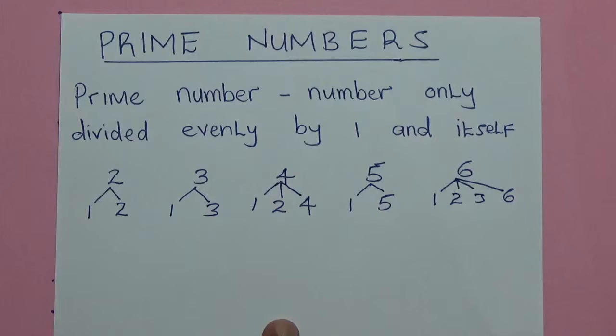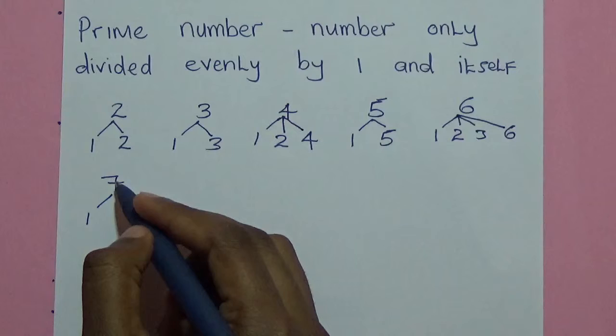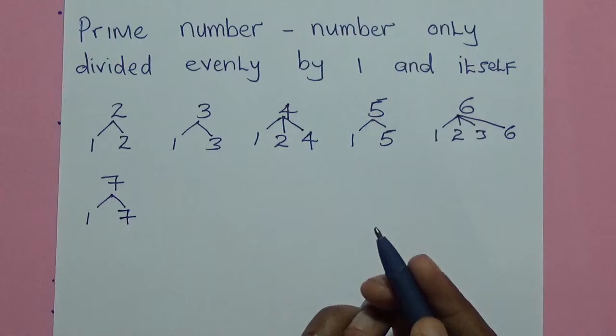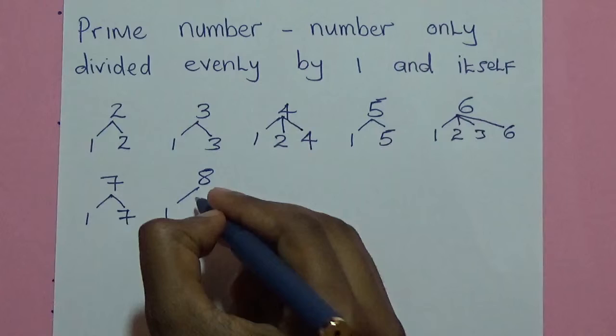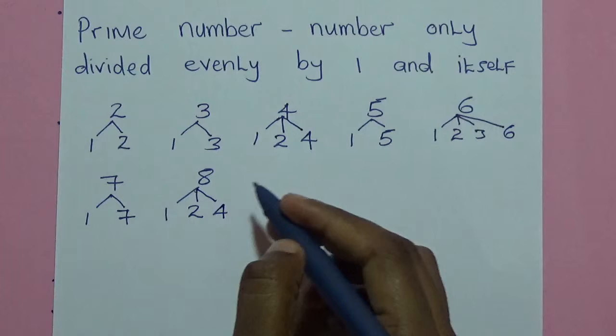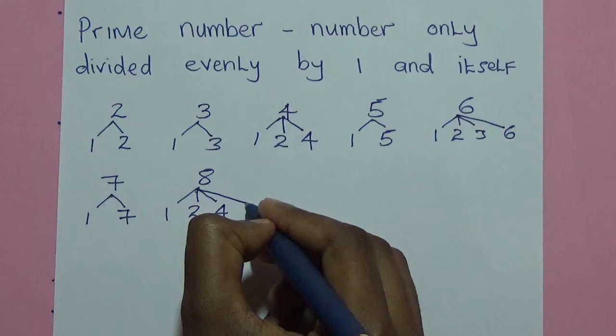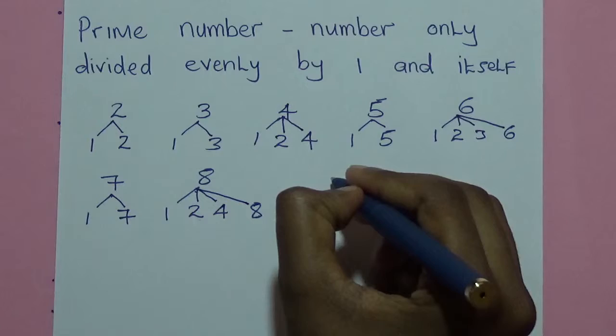The next number is 7. Which numbers can divide 7? We have 1, because 7 divided by 1 will be 7, and itself which is 7 to get 1. Then we go to 8. 8 can be divided by 1 to get 8, also by 2 to get 4, also by 4 because 8 divided by 4 will be 2, and by itself which is 8 to get 1. So 8 can be divided by 1, 2, 4, and 8.